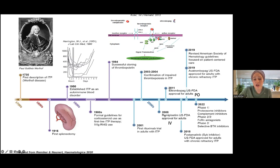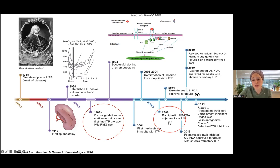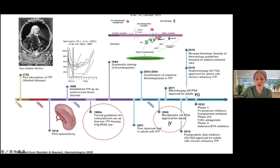Thrombopoiesis-stimulating agents were first described in the 1990s, and the first TPO mimetic drug — romiplostim, which is an IV drug — was approved in 2008. It added to remission rates in these patients. Since then, more drugs with different mechanisms have been introduced.